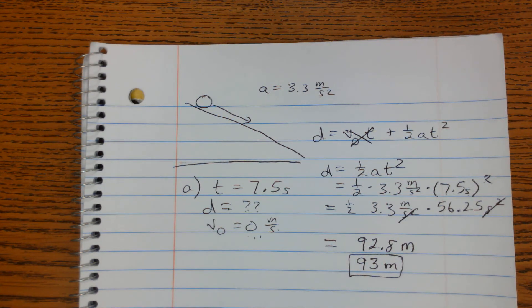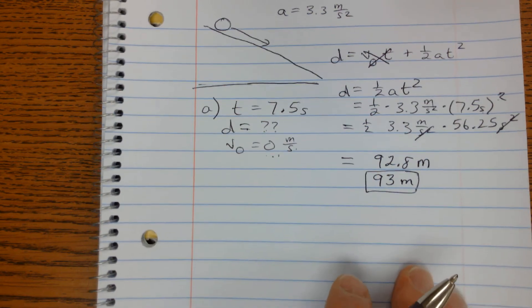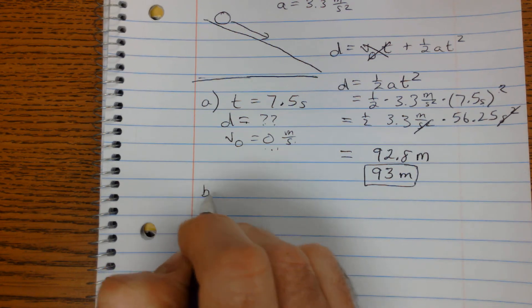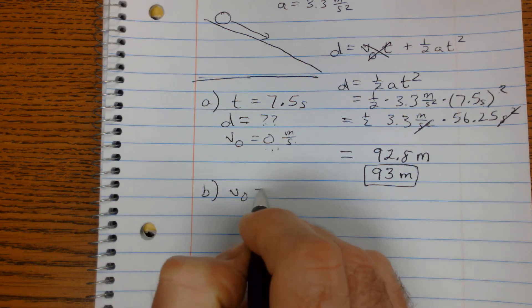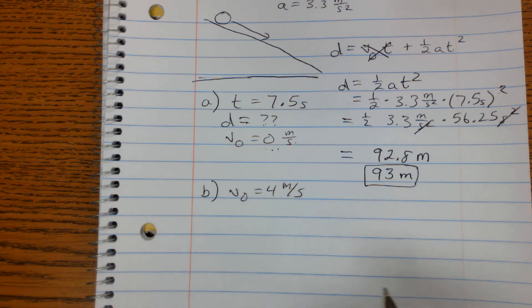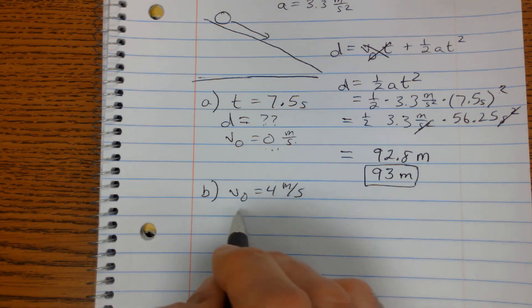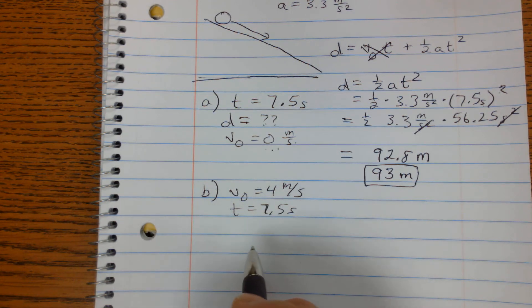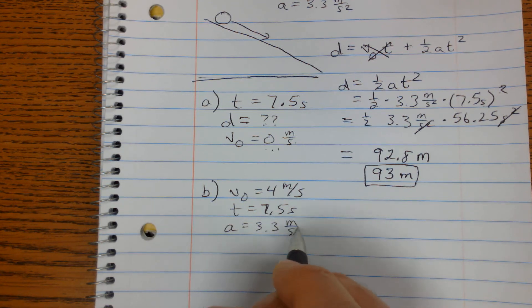And then part two says, what if it had started at an initial velocity of 4 meters per second? So in part B, we've got an initial velocity of 4 meters per second. Everything else is going to remain the same. The time is still 7.5 seconds. The acceleration is still 3.3 meters per second squared.